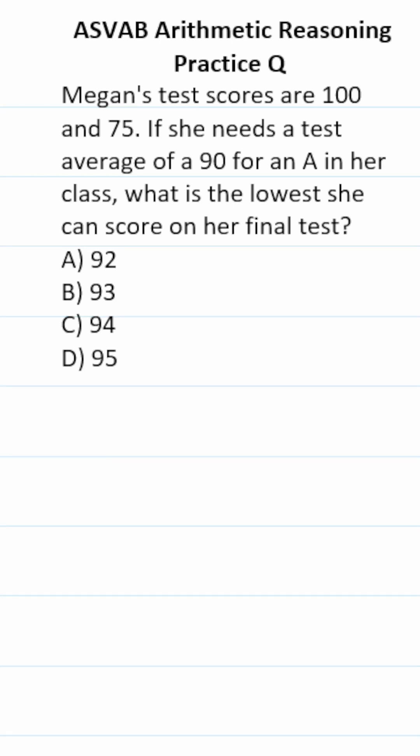This arithmetic reasoning question says: Megan's test scores are 100 and 75. She needs a test average of 90 for an A in her class. What is the lowest she can score on her final test?